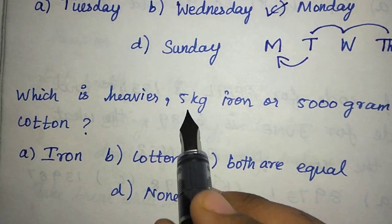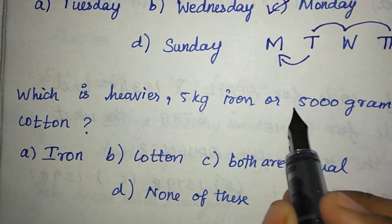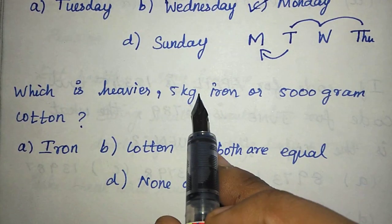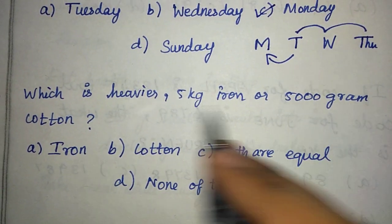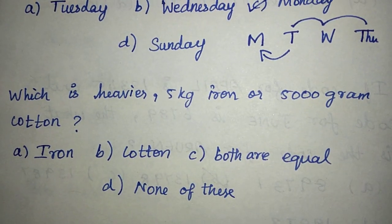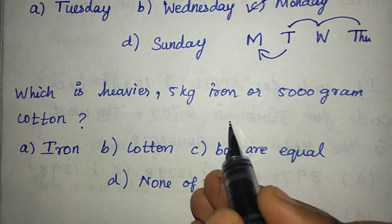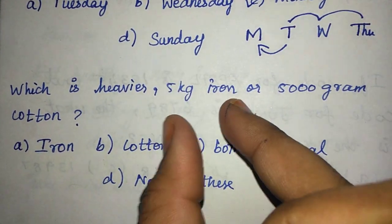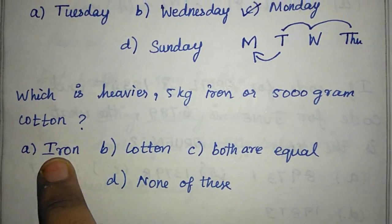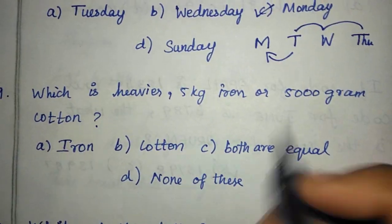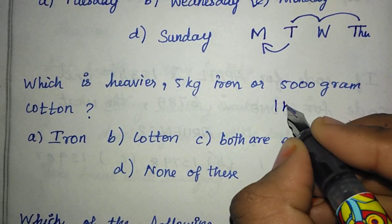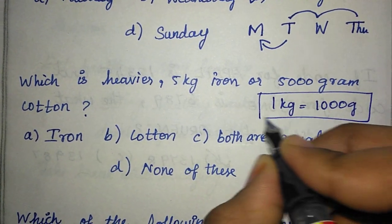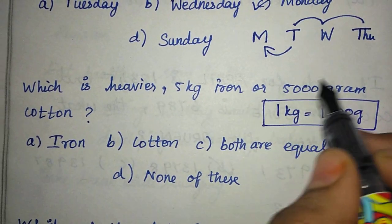Which is heavier: 5kg iron or 500g cotton? Which is heavy? 5kg iron weight? 5000g cotton weight? Now, we know that 1kg is equal to 1000g. 1kg is equal to 1000g. And 5kg is equal to 5000g.